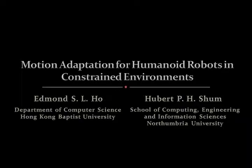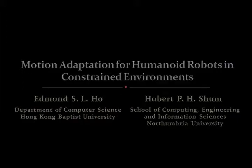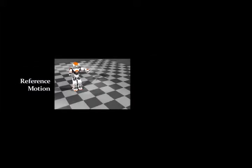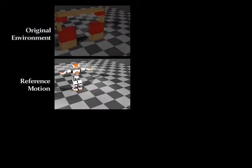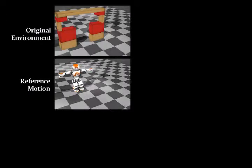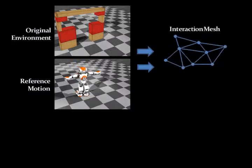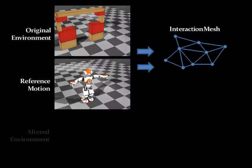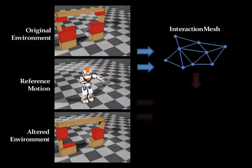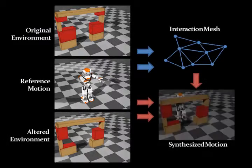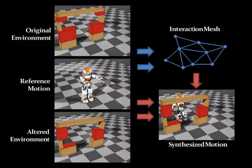In this paper, we propose a new method of synthesizing full-body motion of humanoid robots, which allows them to adapt to changes in the environment. From an initial reference motion, pre-designed for a specific environment, a representation of the robot and its relationship to the environment is captured as an interaction mesh. When the environment is altered, the initial reference motion and the interaction mesh are synthesized to create a new motion, allowing the robot to adapt to and navigate the new environment.